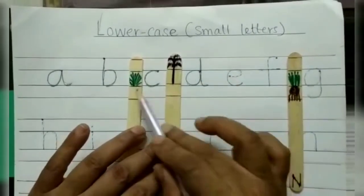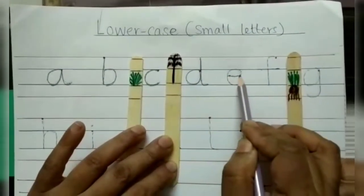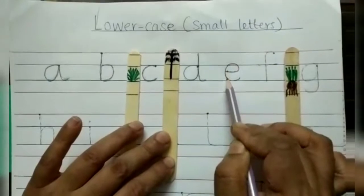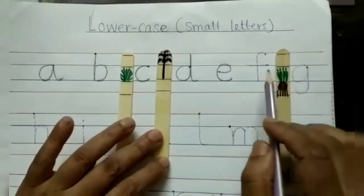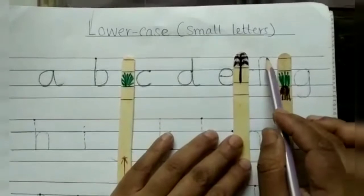E is a small letter or a shrub letter, starting from here — outside, half circle. F is a tall letter, again — down and sleeping line.